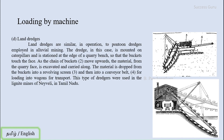Next are land dredges. In alluvial mining we discussed dredges where a boat carries a dredging device — by rotation, like a wheel, it lifts material from the bottom of a river, lake, or sea and processes it through a screen. The same mechanism acting on land is called a land dredge. The land dredge is similar in operation to the pontoon dredge employed in alluvial mining. In this case the dredge is mounted on a caterpillar and stationed at the edge of the quarry bench.